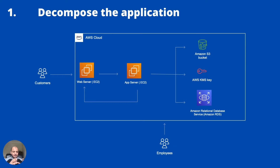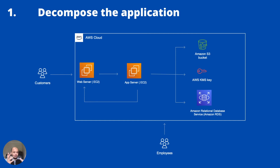In this example, customers are accessing a web server, which connects to an app server — let's assume this is on Amazon Web Services. You might have an S3 bucket for storage, an RDS database, and a KMS for encryption. Employees are accessing it over a VPN. Once you've mapped this out and understood how the application works, that's your data flow diagram — now move to the next step: what can go wrong.